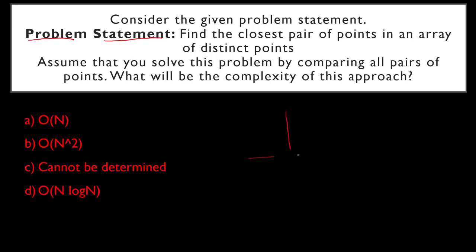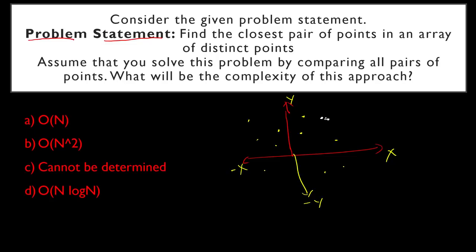The problem involves an X and Y axis with some points plotted. You have to find one pair of points that are the closest to each other. Distinct points means no two points will be the same. You have to find this closest pair.